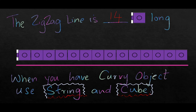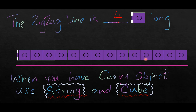Now you understand how we did it. It says: when you have a curvy object, use string and cubes. So whenever you want to measure something that is not straight, first place the string along it, take the measurement, then put the string straight, and then place the cubes on top to measure. This is our important point: when you have a curvy object, use string and cubes. For something already straight, just use cubes or paper clips.